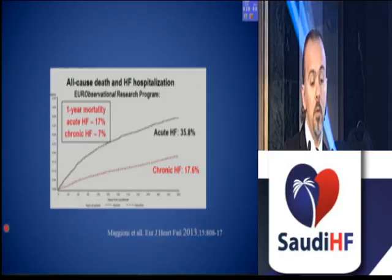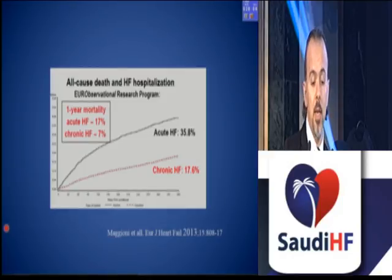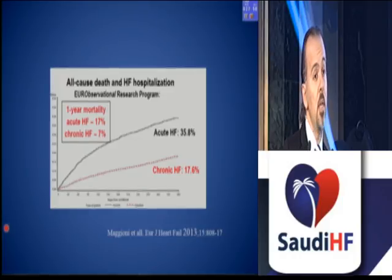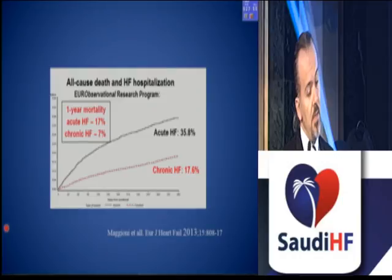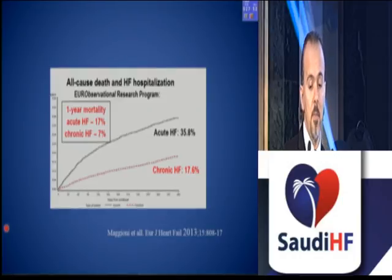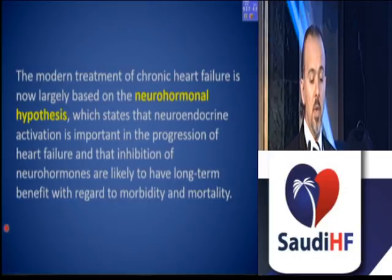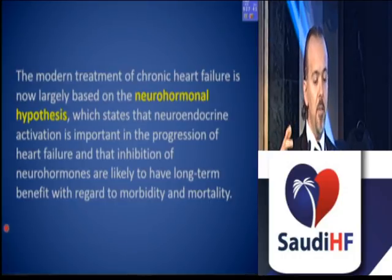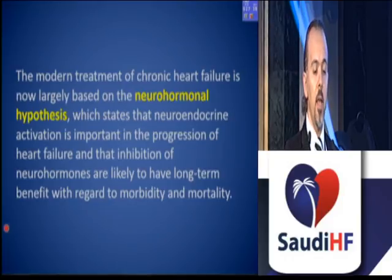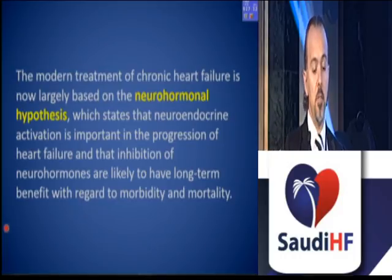Based on our observational research program, all-cause death and heart failure re-hospitalization rate is particularly high in acute heart failure. It is also high in chronic heart failure, with a one-year mortality for chronic heart failure of 7%, and in acute heart failure it is 17%. Modern management of chronic heart failure is now largely based on the neurohormonal hypothesis, which states that neuroendocrine activation is important in heart failure progression, and inhibition of neurohormones is likely to have long-term benefits regarding morbidity and mortality — now a proven fact.